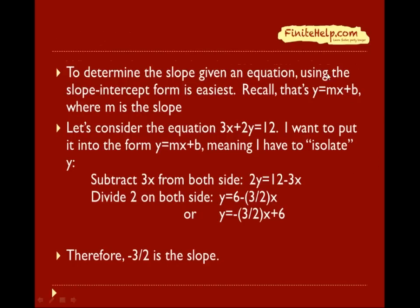Sometimes you have to determine the slope given an equation. We're just going to use the slope-intercept form, which is y equals mx plus b. Let's consider the equation 3x plus 2y equals 12. I want to put this equation into the form y equals mx plus b. I'm going to isolate y by itself. First, I'm going to move the 3x over by subtracting 3x from both sides. And then now, I'm going to divide both sides by 2.